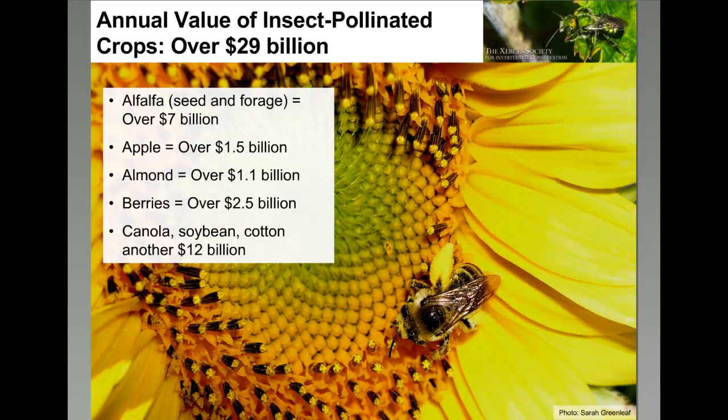Cornell University estimated that about $29 billion in pollination services come to us because of insect pollinators — all the bees, flies, moths, and butterflies that come together to pollinate crops. Those are directly pollinated crops like alfalfa, apples, almonds, and berries that rely directly on a pollinator to transfer pollen from flower to flower. Some crops like soybeans can self-pollinate but their yield is enhanced by insect pollinators. And that $29 billion figure is just North America.